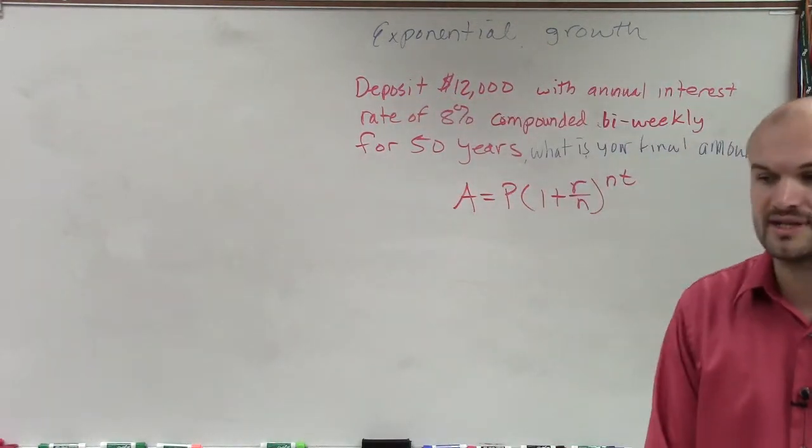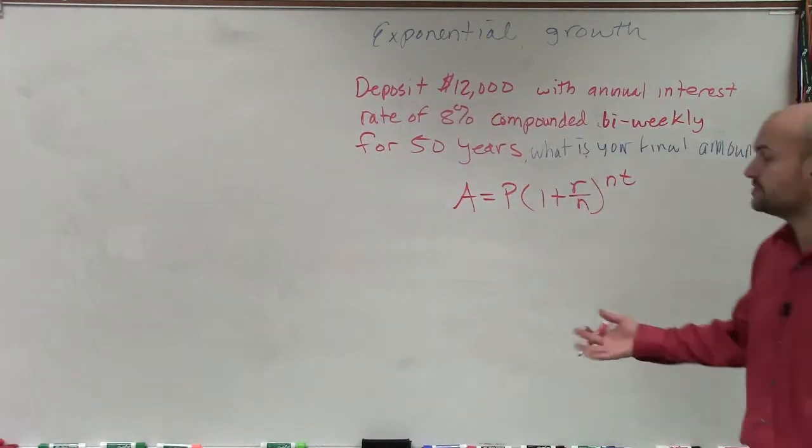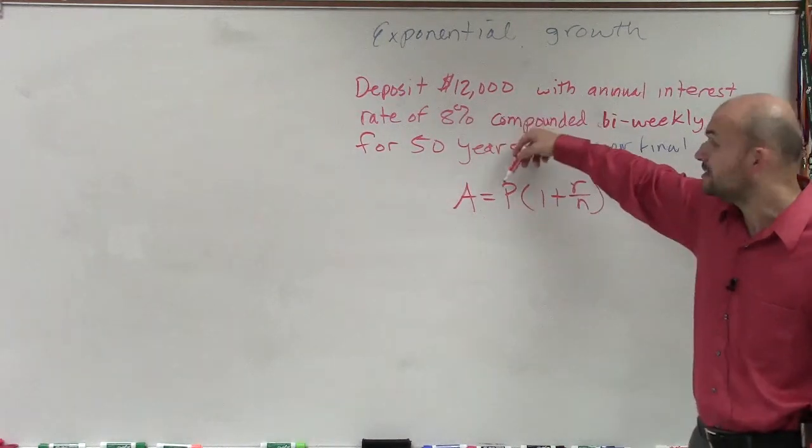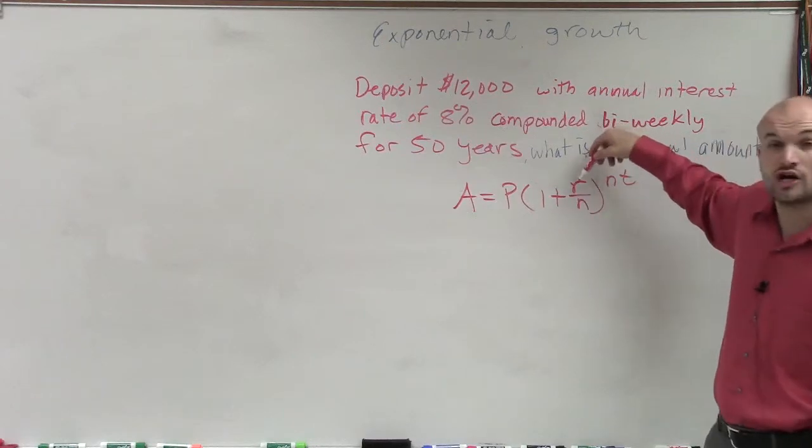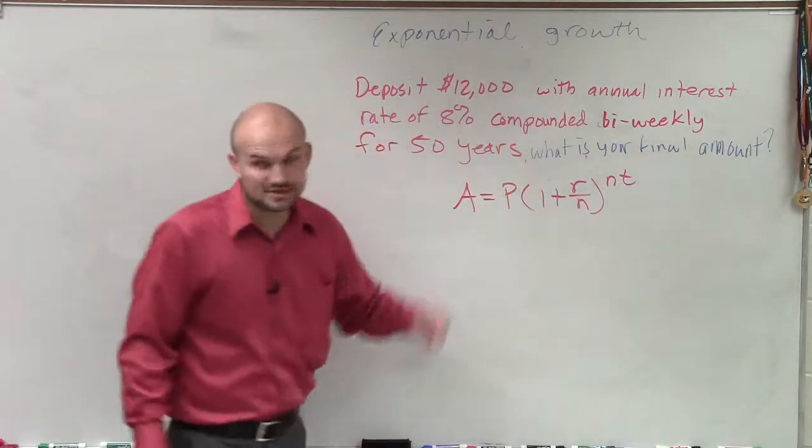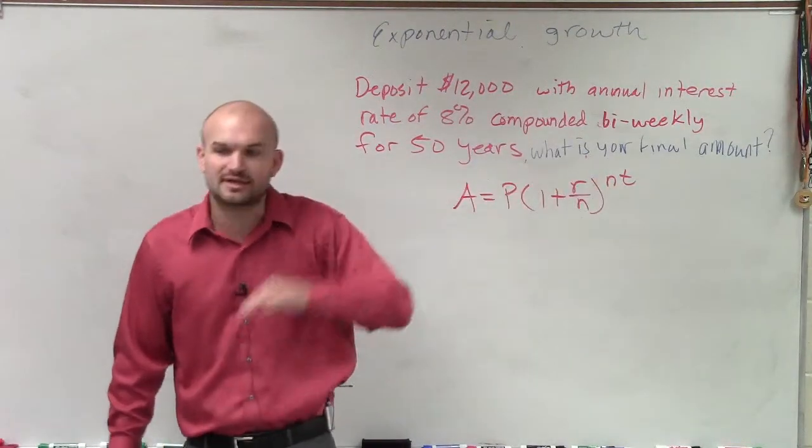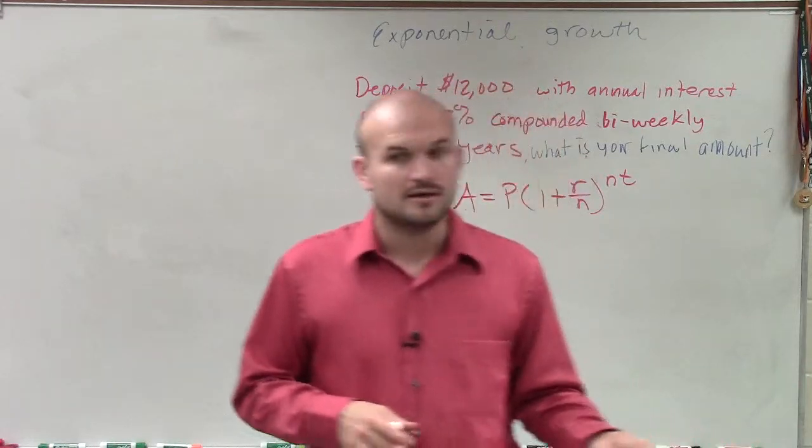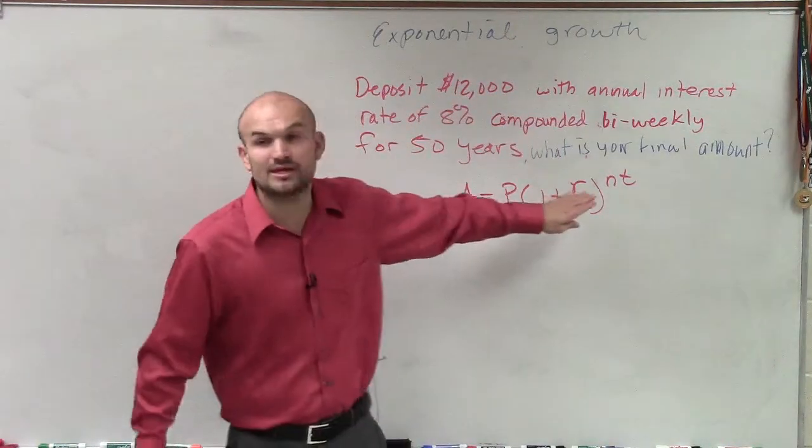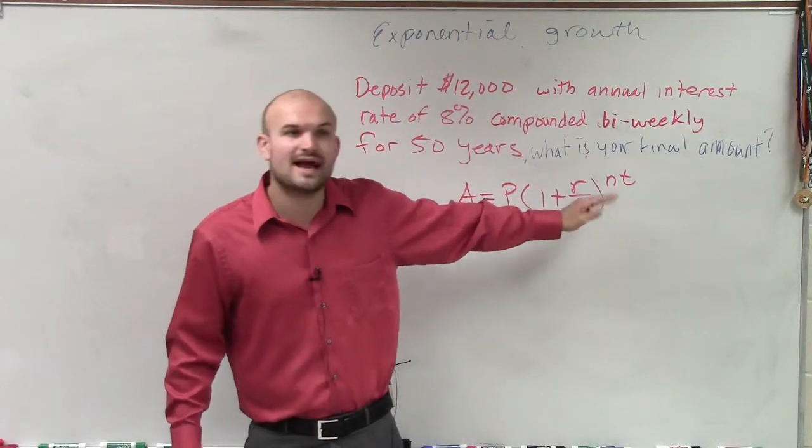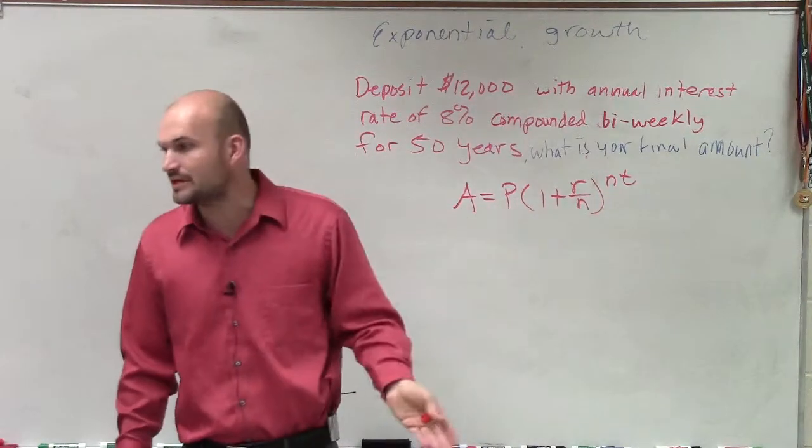So by using that formula, our values are going to be the exact same. Our A is our final value. P is our initial amount. R is going to be our annual interest rate in decimals. T is going to be our years. But now N is going to tell us how many times we're going to compound per year. For continuously, we use the constant E. But now we're going to have N, which is going to represent how many times we're going to compound it per year.